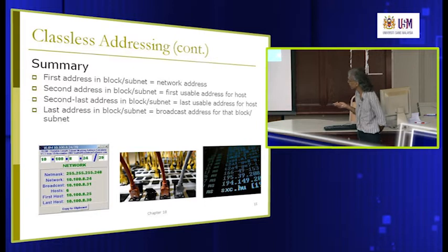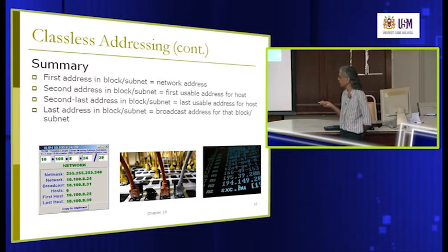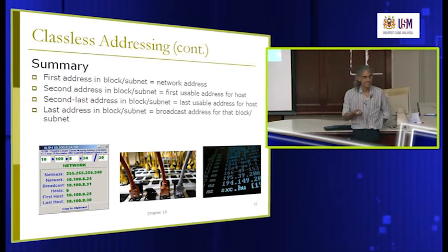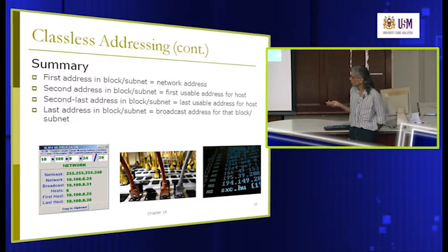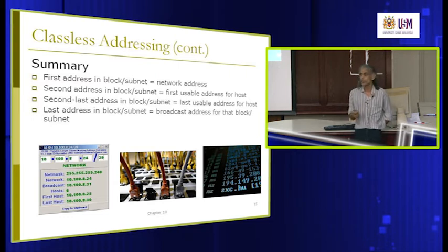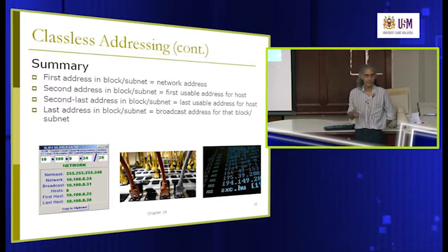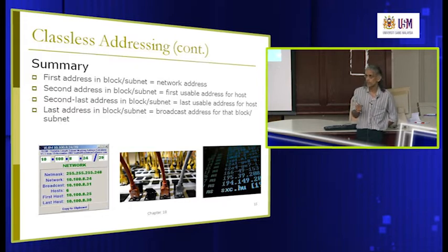For example, the first host is 25, the last host is 30, the network address is 24, and the broadcast is 31. So this block is from 24 to 31 — eight addresses. The first is reserved, the last is reserved, so we only have six usable IP addresses. If you have 16 addresses, two cannot be used, only the remaining 14 can be assigned.